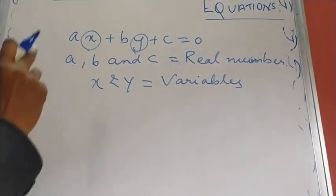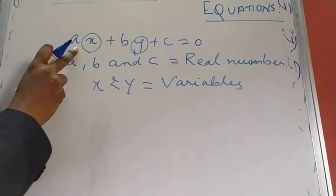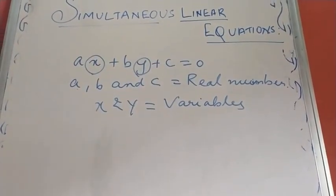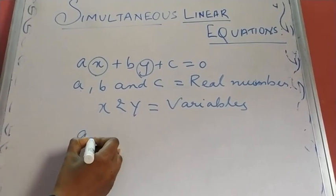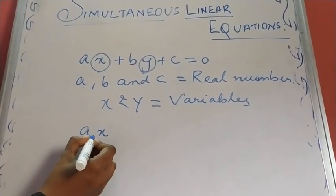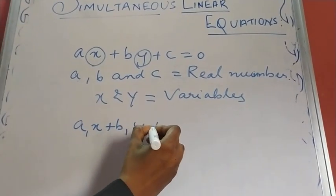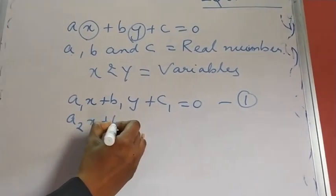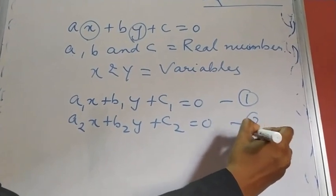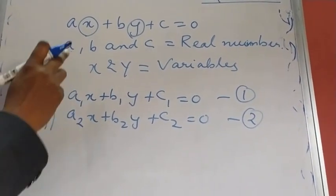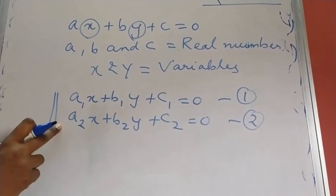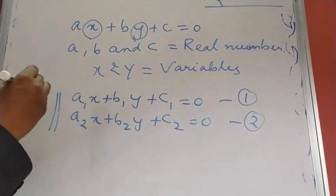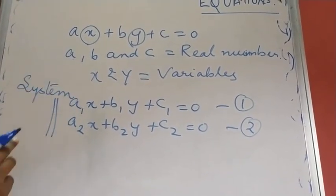Any equation which is of the form Ax plus By plus C is equal to 0 is a linear equation. If we have a pair of linear equations — for example, A1X plus B1Y plus C1 equals 0 as the first equation — these equations exist as a pair, so we call this a system of linear equations or a system of simultaneous linear equations.